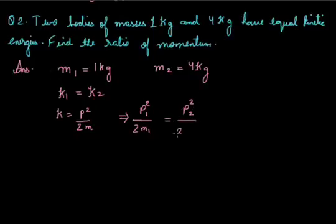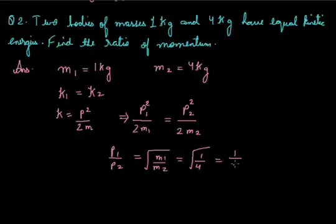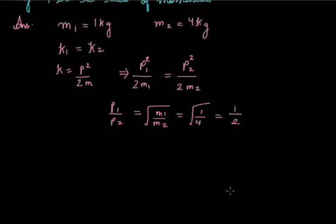P₂ is the momentum associated with the second body. Now substituting the values, we get P₁/P₂ = √(M₁/M₂). We know the values: M₁ = 1 and M₂ = 4. Hence the ratio is 1/2, so the momentum ratio will be 1:2.